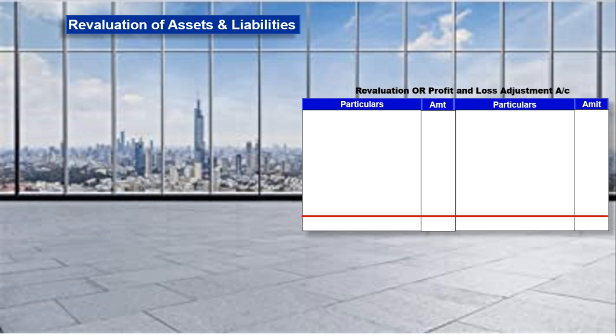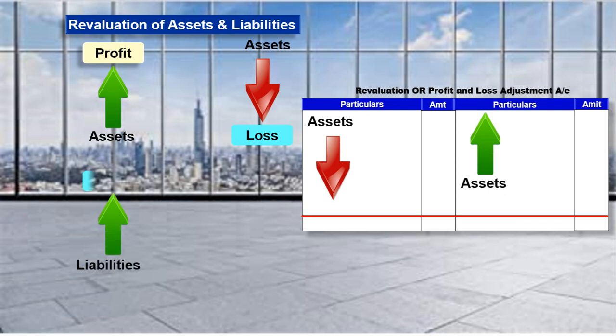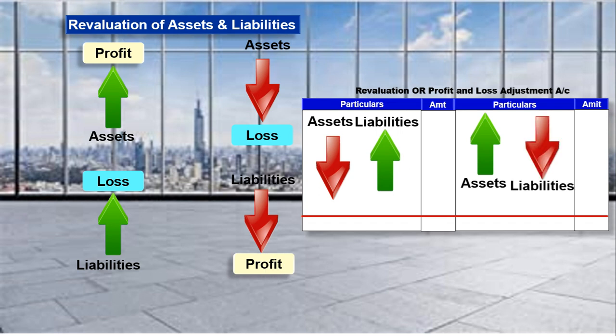Partnership में जब new partner admit होता है, तब new balance sheet के अंदर market में चल रहे asset की value को record किया जाता है. अगर कोई asset increase होता है तो firm के लिए profit है, या asset decrease होता है तो firm के लिए loss है. इसी तरह अगर कोई liabilities increase होती है तो firm के लिए loss है, या liability decrease होती है तो firm के लिए profit है. Assets और liability में होने वाला increase-decrease ये Revaluation account या Profit and Loss Adjustment account में record किया जाता है. Revaluation होने पर मिलने वाला profit और loss ये old partners को अपने old ratio से बाँट लेते हैं.